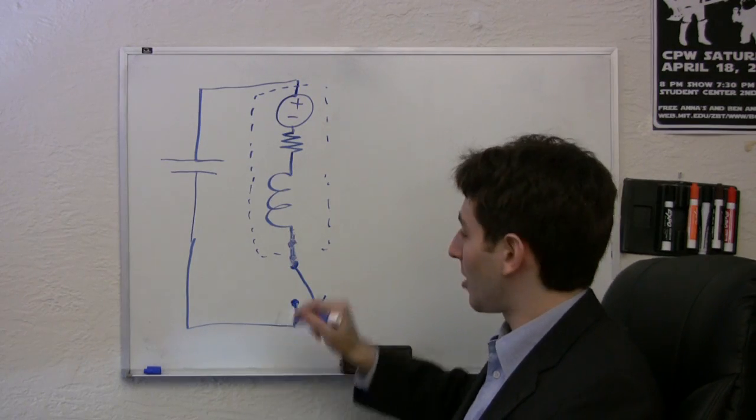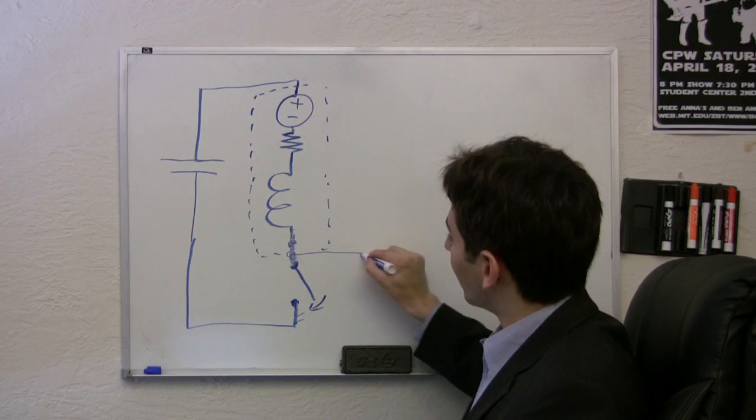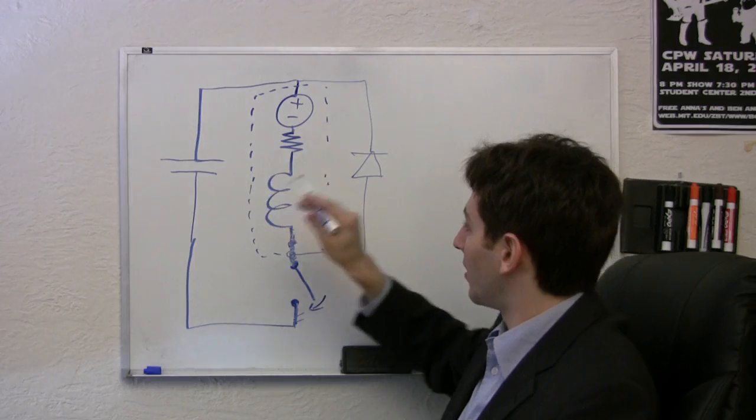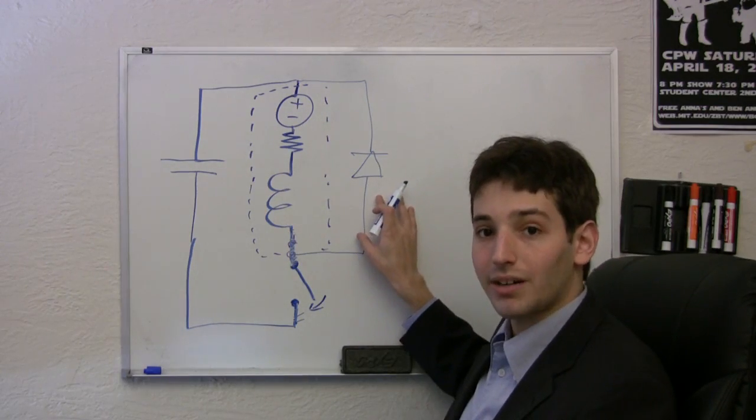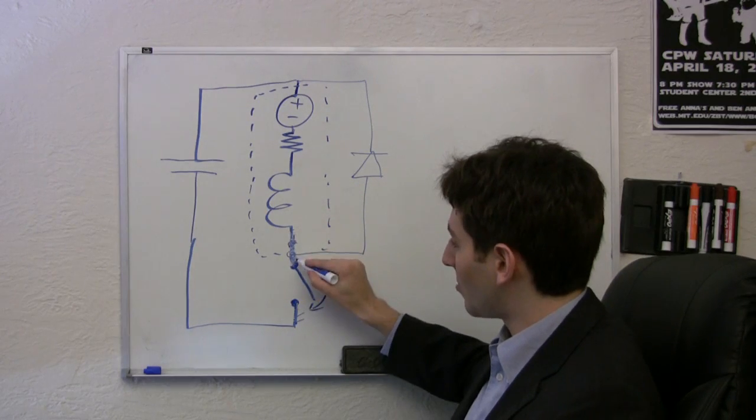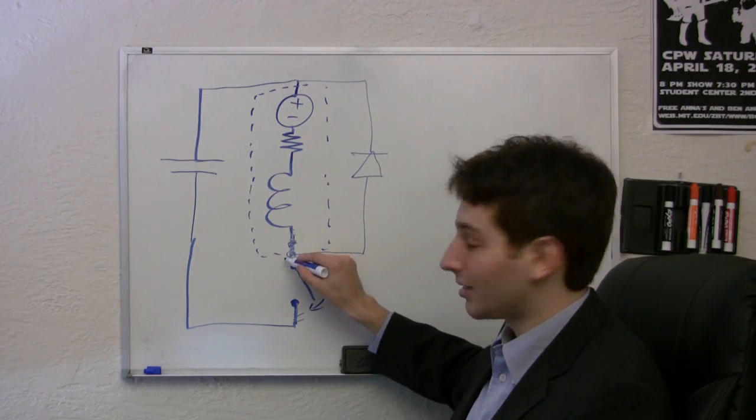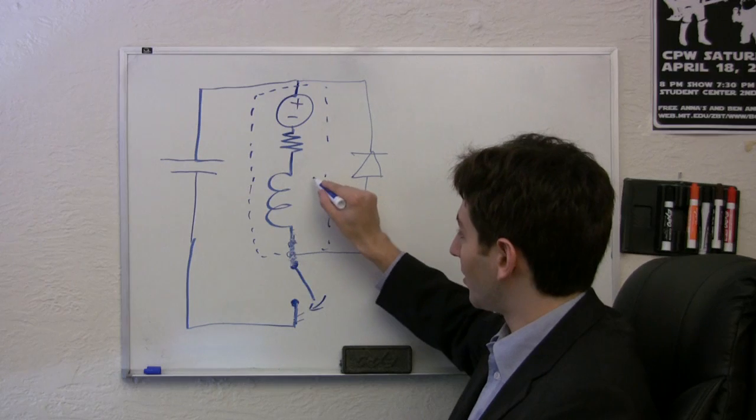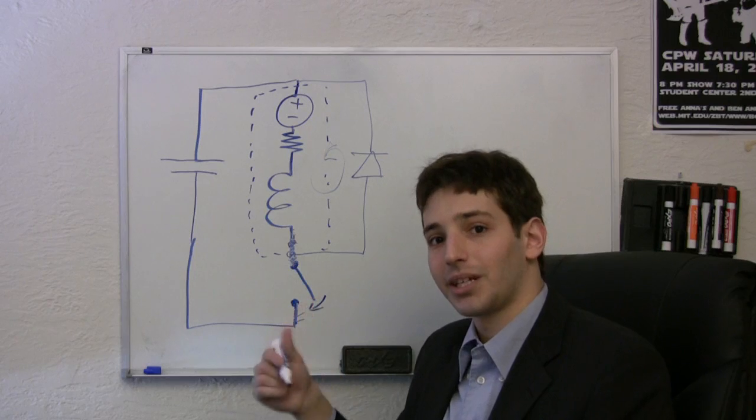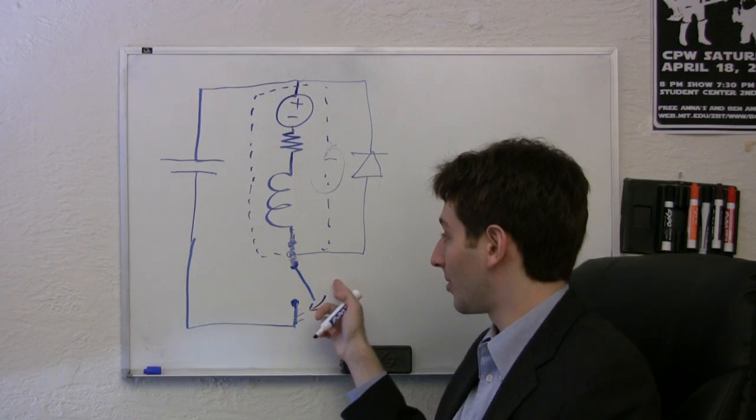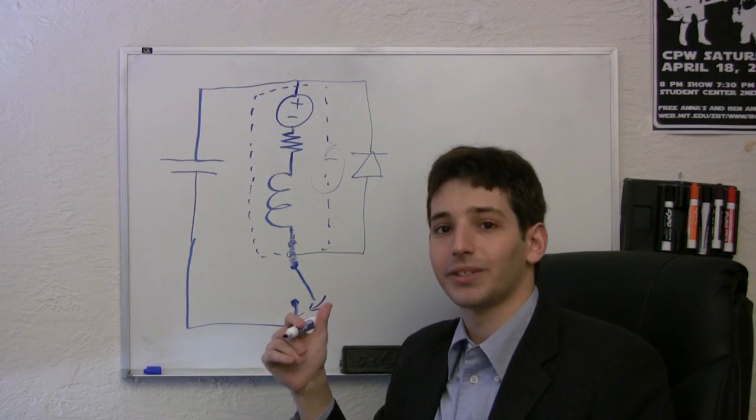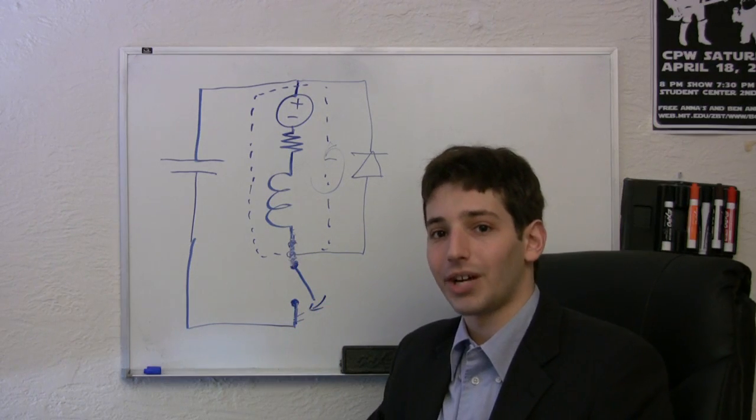We can actually fix this problem by adding one diode in parallel with the motor, but in reverse. A diode only lets current flow in one direction. So when the motor's on as normal, it's not doing anything. But when this switch is opened and this voltage starts to rise, this diode will start to turn on and will allow current to flow in this loop. This prevents the voltage from getting dangerously high and protects your components. This diode's called a flyback diode in this configuration, and this is an important part of driving any inductive load.